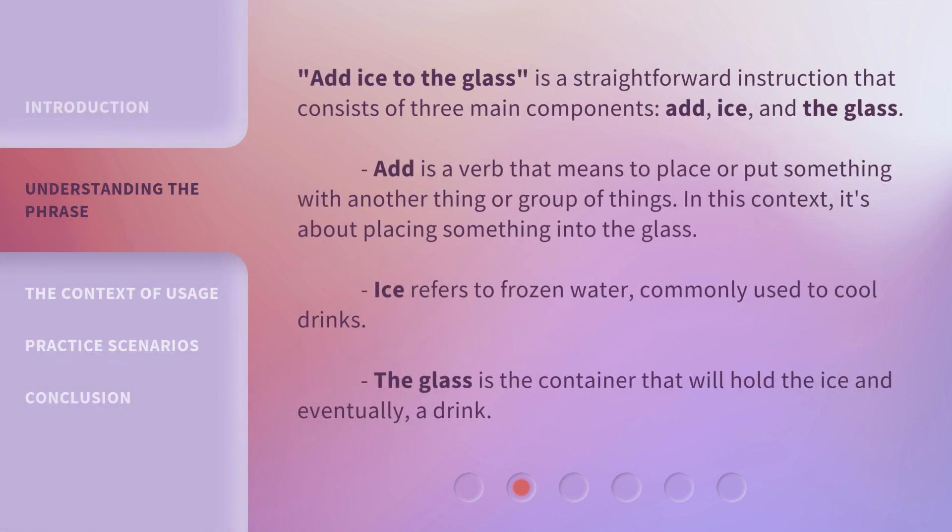Add ice to the glass is a straightforward instruction that consists of three main components: add, ice, and the glass. Add is a verb that means to place or put something with another thing or group of things. In this context, it's about placing something into the glass. Ice refers to frozen water, commonly used to cool drinks. The glass is the container that will hold the ice and, eventually, a drink.